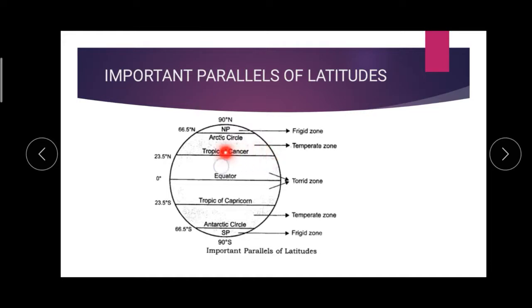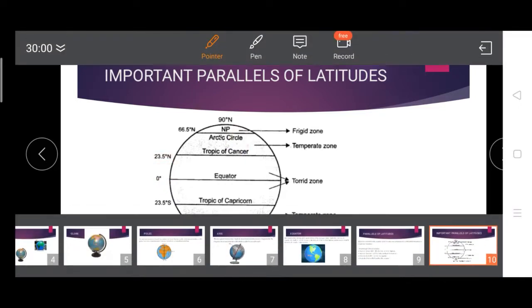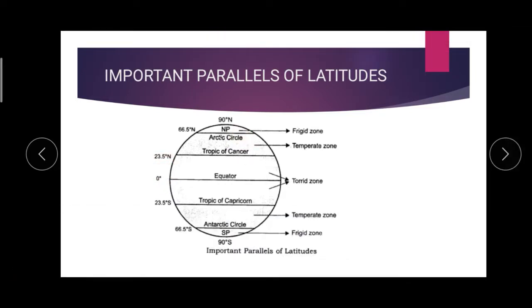Tropic of Cancer is at 23½° north — it is north of the equator. Tropic of Capricorn is at 23½° south.